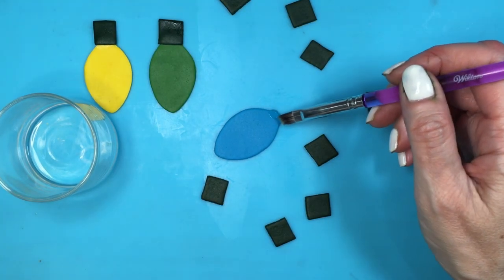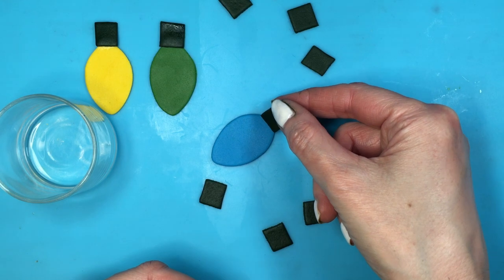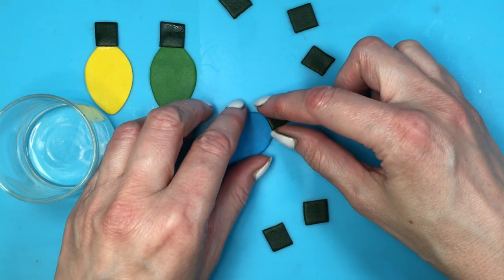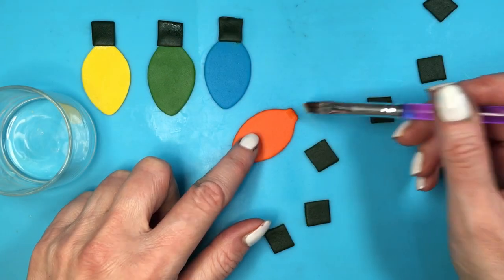Then I'm gonna be using some water with my brush - the one by Wilton. This comes in a set, I think they're worth it. I'm gonna be adding some water and just placing the squares on top.